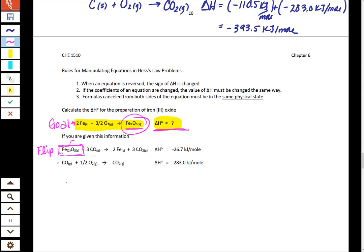So when we flip it, I'm going to rewrite it down here to help me keep track of things. And when we flip it, the delta H is going to flip too. It's going to flip signs. So now it's going to be a positive 26.7 kilojoules per mole.